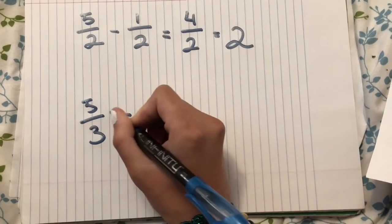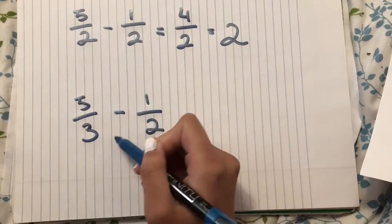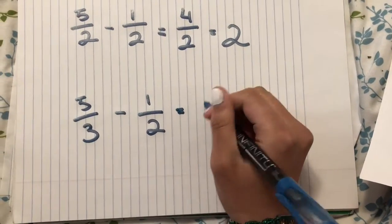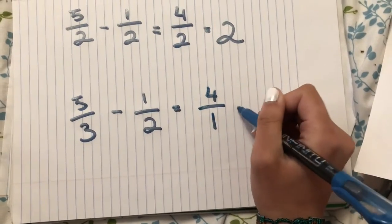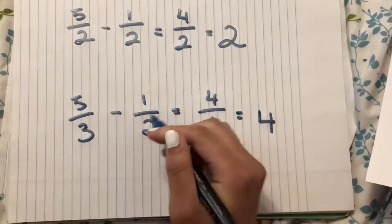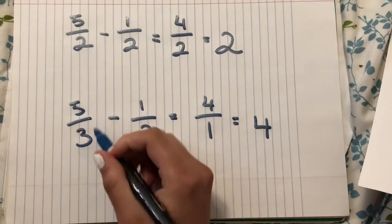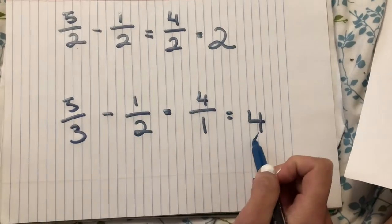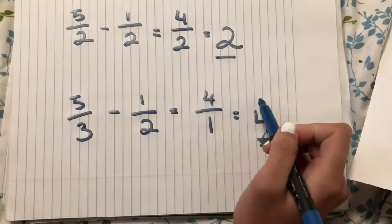...minus 1 over 2? How do we subtract 5 and 1 when the 3 and the 2 are different? If we just subtracted them, it would be 4 over 1, and that would be 4, which is greater than 2. And since we know that 5 over 3 is less than 5 over 2, how could we have a greater number here than in our previous one?